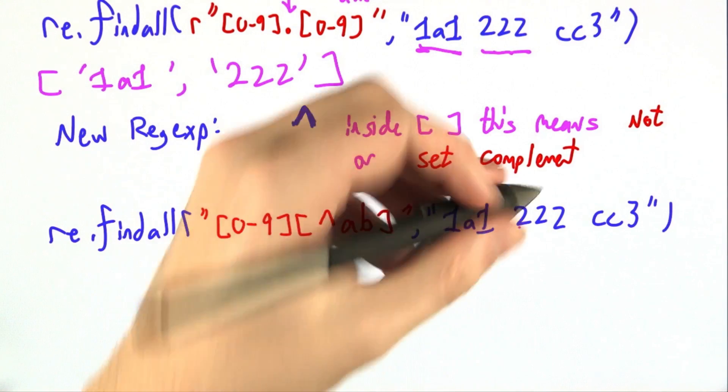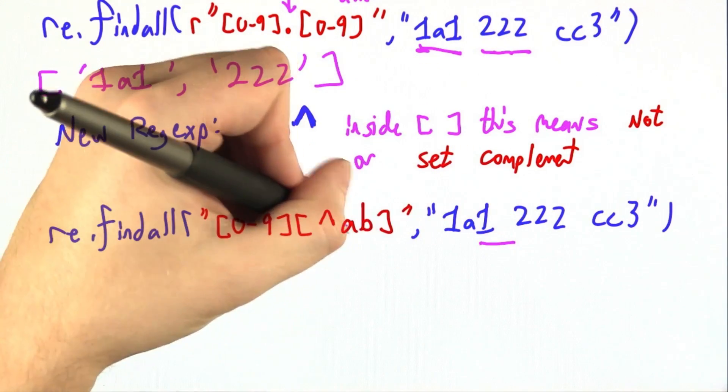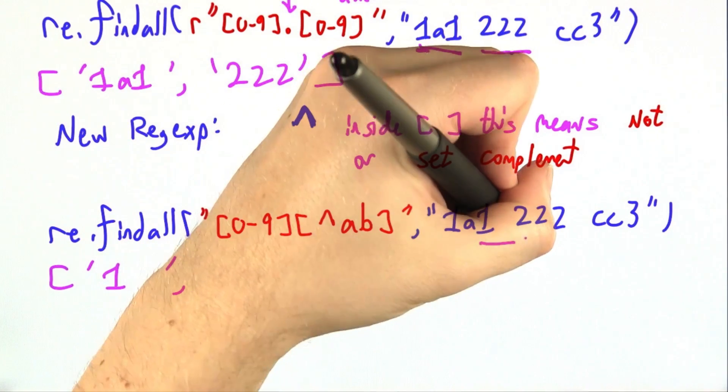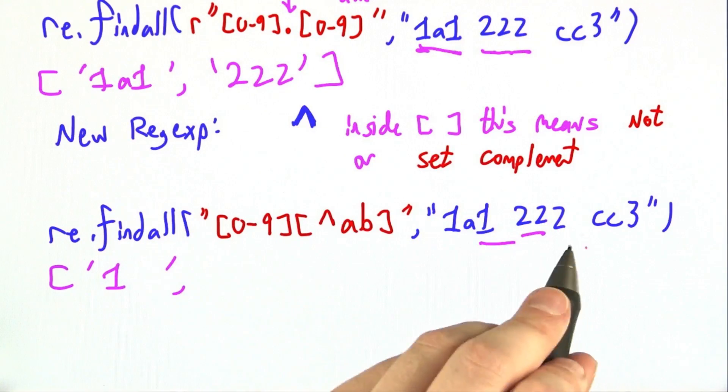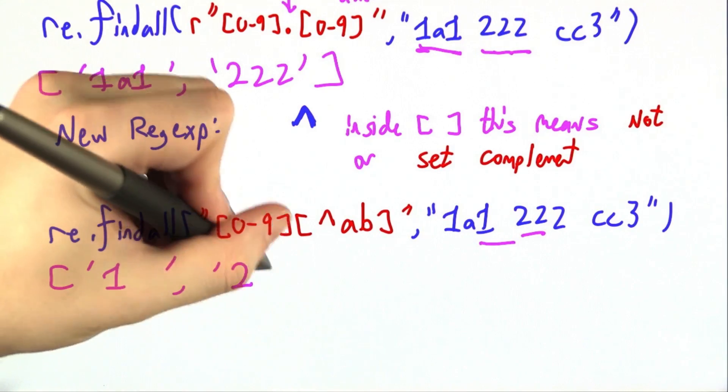But over here we've got a 1 and a space, and space isn't a or b, so that looks good. Then here we've got a 2 and a 2, and this second 2 is not a or b, so that looks good.